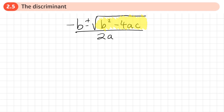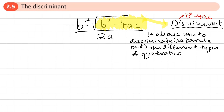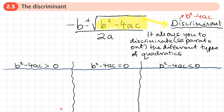This value, this number that we work out here, has got a special name — it's called the discriminant. The discriminant, b squared minus 4ac, allows us to discriminate or separate out the different types of quadratics. We're now going to look at the different values which the discriminant b squared minus 4ac could be.